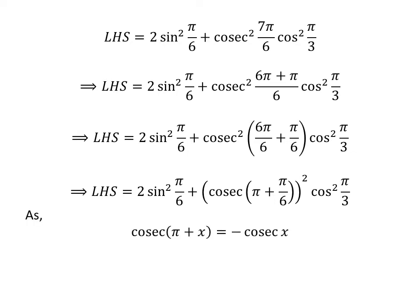As we know, cosecant of pi plus x is equal to minus cosecant of x. The proof of this identity is given in the video appearing in the upper right corner of this video, and the link is also given in the description section.